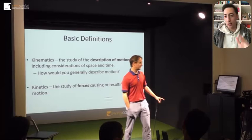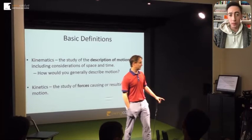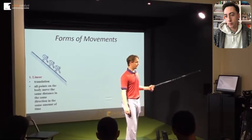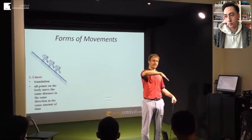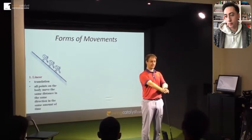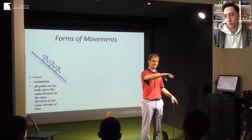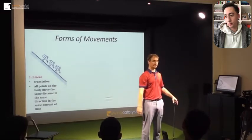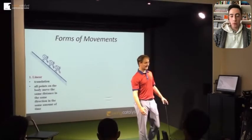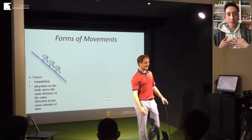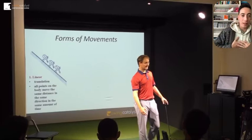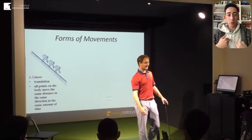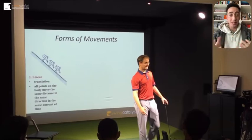We're going to skip ahead to where he starts talking about types of motion. Anytime we move, we can move in one of three ways. The first is linear translation: if you look at a skier going down a hill, any point on their body — ear, hip, wrist, knee, ankle — will move through the same distance in the same amount of time. That's a linear translation. In a golf sense, if you're purely sliding without rotating yet, that would be linear translation — your sternum and shoulder all moving the same distance in the same time.